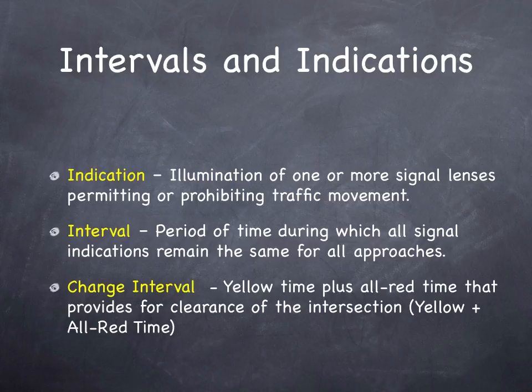We have some more terms. An indication is the illumination — the lighting of one or more signal lenses — permitting or prohibiting a traffic movement. So if there's a green indication, the green light is lit; if there's a red indication, the red light is lit.